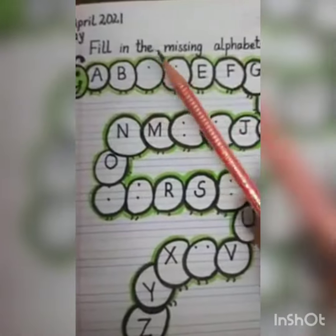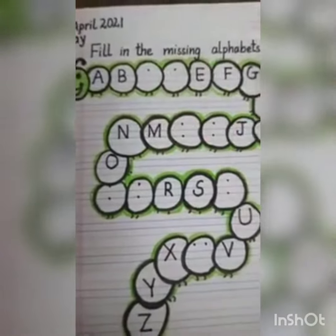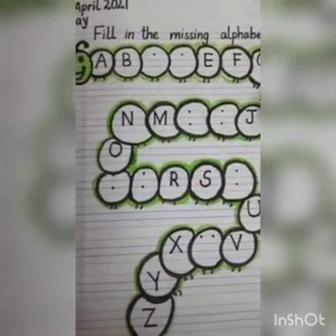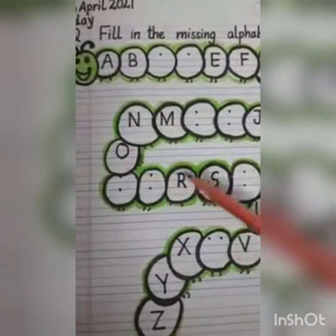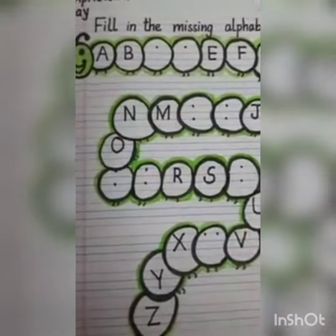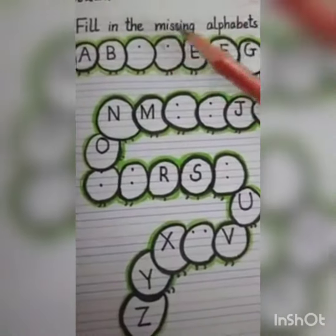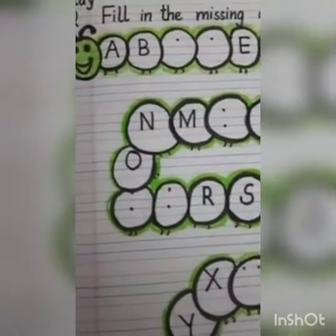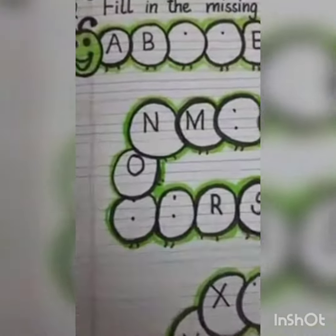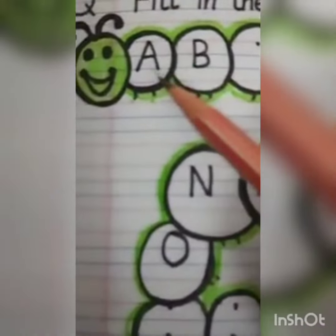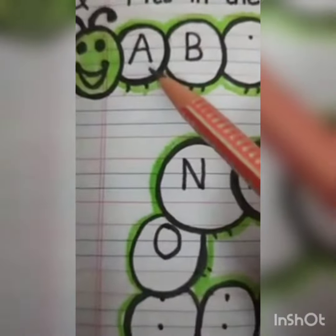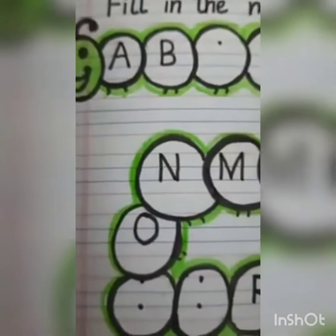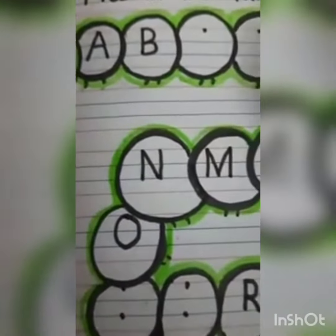Children, today we are going to do fill in the missing alphabets. This is a caterpillar, and we have to fill the missing letters. Okay, so let's start. A — what comes after A? B. After B?